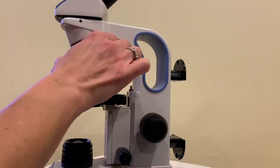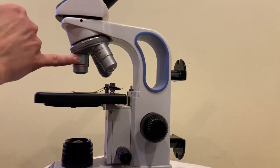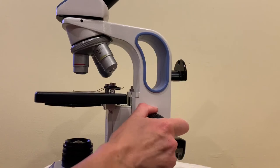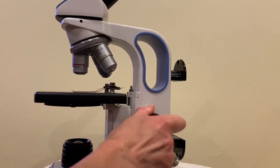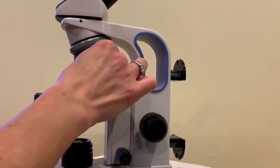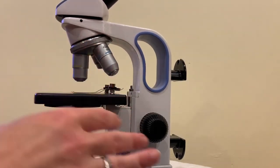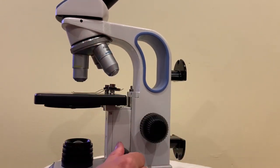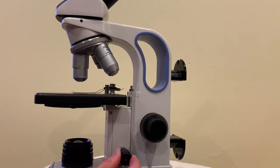So once you have everything into focus under the smallest magnification with the coarse focus knob, when you zoom in it should pretty much still be in focus but you might have to make a couple adjustments. You just move it a little bit.